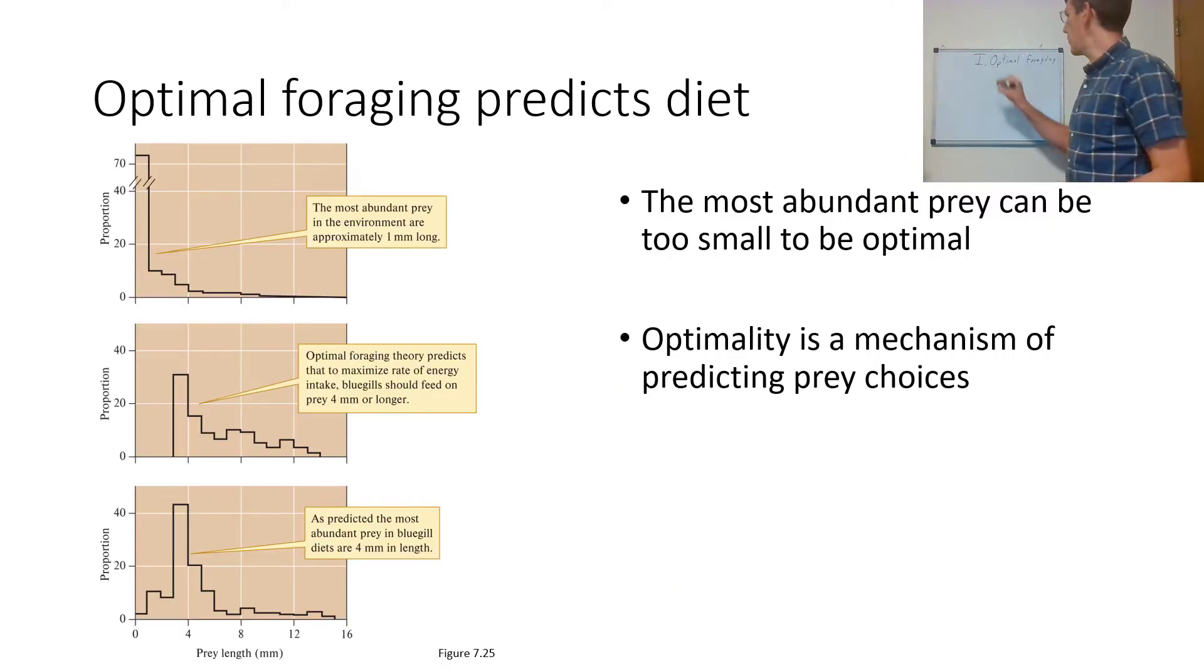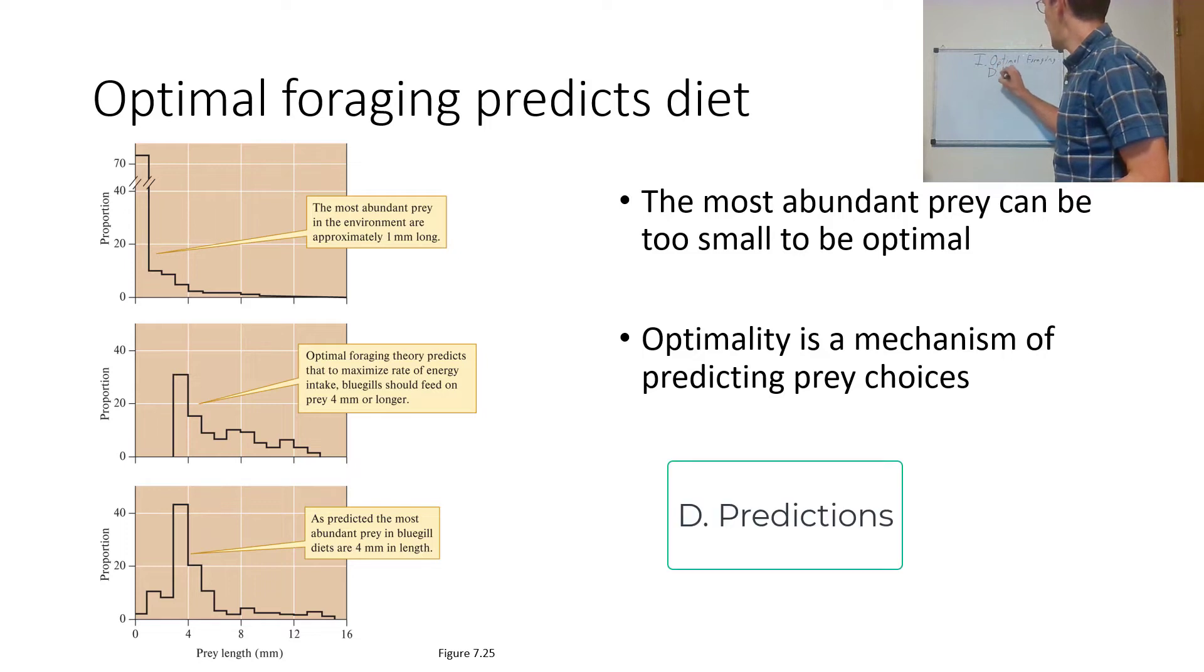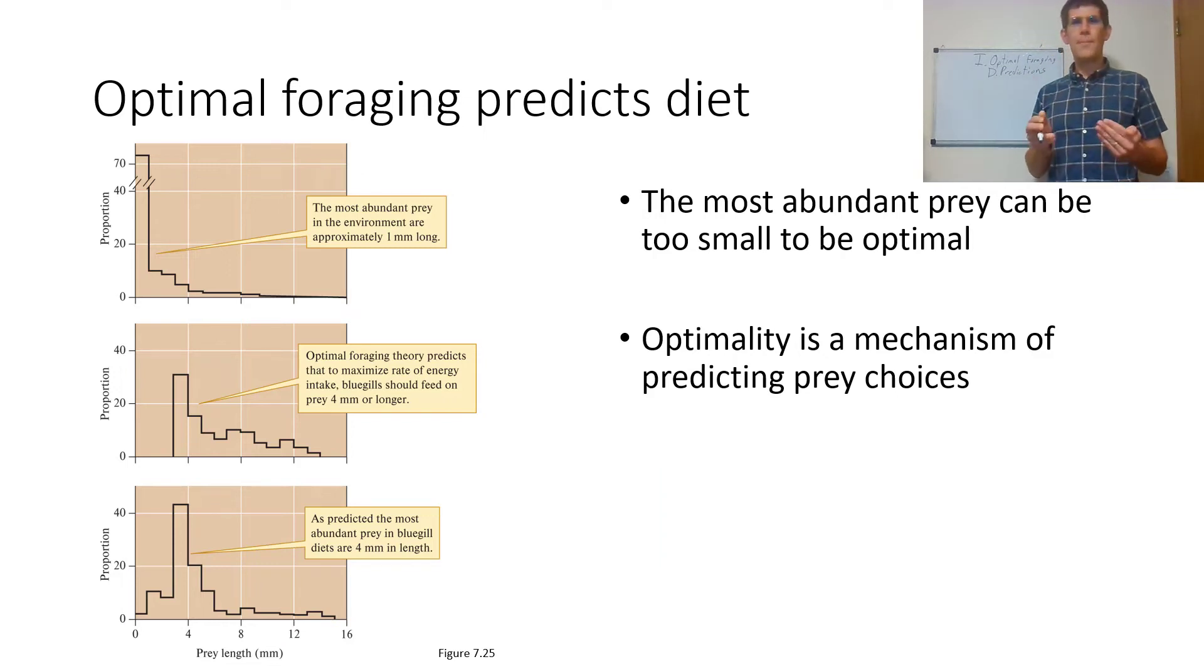This gives us the ability to make certain predictions. If we were to test this out in nature, we would hypothesize that the best prey will be what is most common, but also what gives the most energy. Here we see sunfish eating different types of prey. The most abundant prey in the environment are approximately one millimeter long.